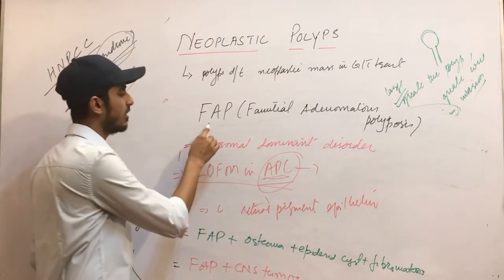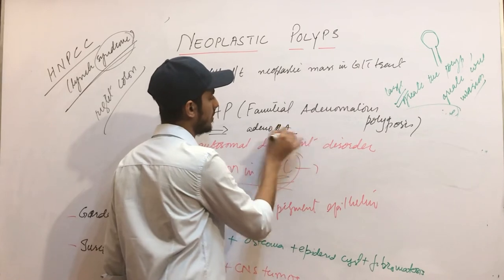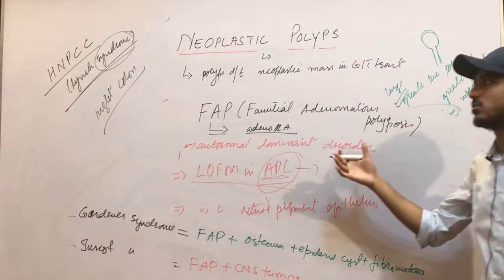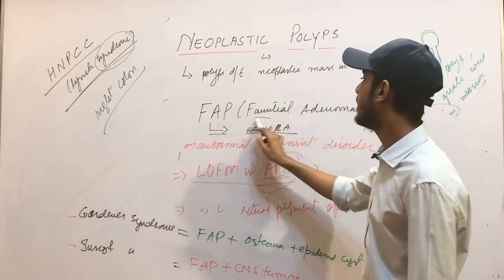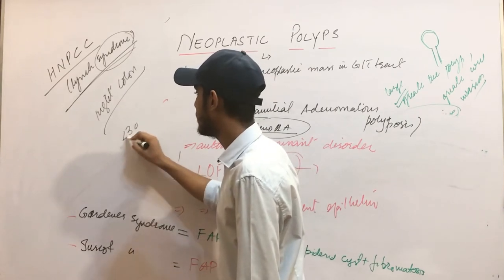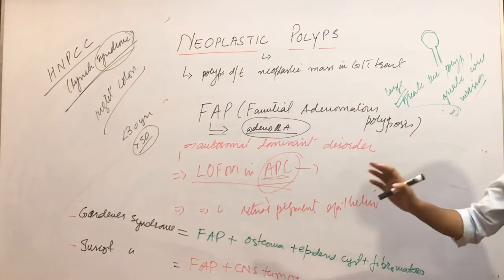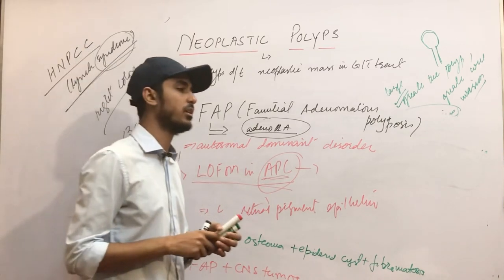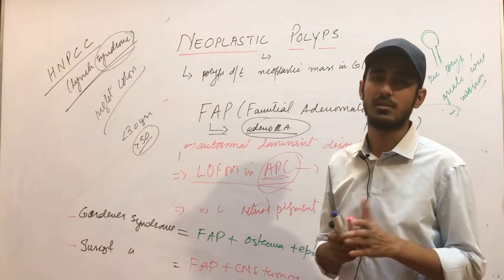One important point about FAP: if FAP is not treated, it will lead to adenocarcinoma, because these are neoplastic polyps. FAP is a condition that can lead to adenocarcinoma in 100% of cases if untreated, typically before or around 50 years of age. This is all about neoplastic polyps, covering adenomas, sessile serrated adenomas, FAP, and Lynch syndrome. If you have any queries, you can ask in the comment section. Thank you.